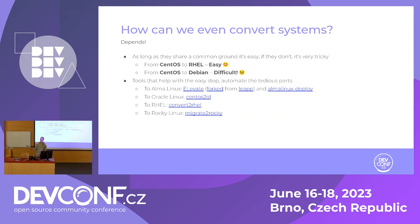Most of the systems that are similar to CentOS are based off of RHEL. So you have Alma, you have Rocky, you have Oracle Linux, CentOS as well. CentOS Stream is actually upstream, so it doesn't really count, but that's what RHEL is based off of. That's why it makes it quite easy to convert.